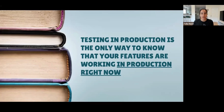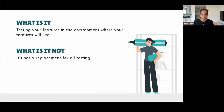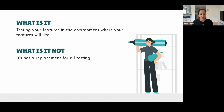Testing in production is the only way to know that your features are working in production right now. It means testing your features in the environment they will actually live in, not using a dummy environment like staging, QA, or test. And it's important to note that it's not a replacement for all of your testing, which we'll get into a bit later.